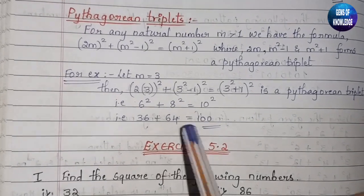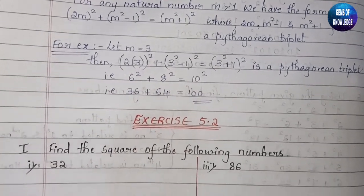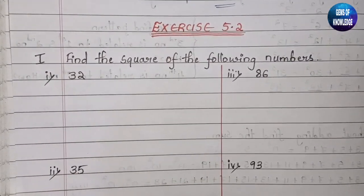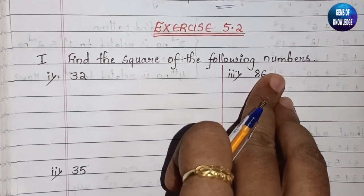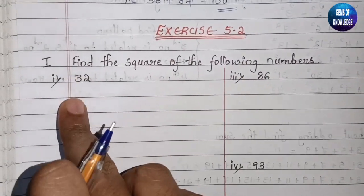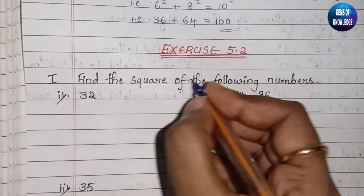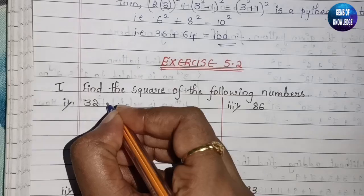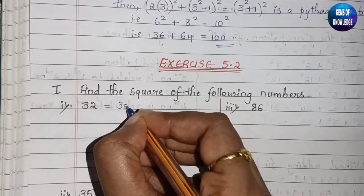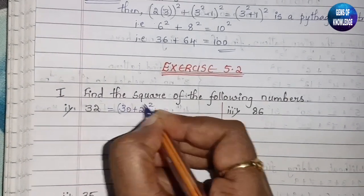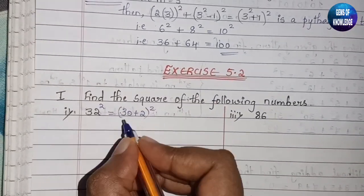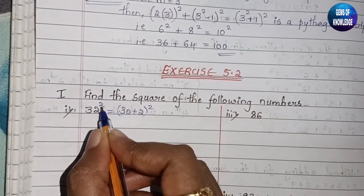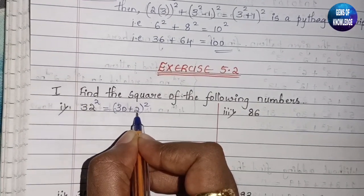Now let us move on to exercise 5.2. The first question asks us to find the square of the following numbers. The first one is 32. To find the square, we will not multiply 32 × 32 directly. Instead, we write 32 as 30 + 2, so we compute (30+2)².